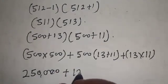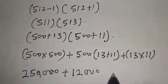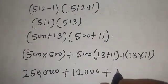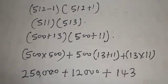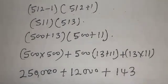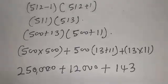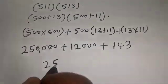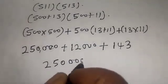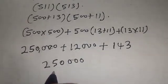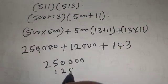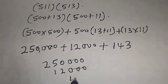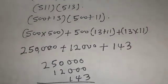we have 12,000 plus 143. Let's add everything together now: 250,000 plus 12,000 plus 143, let's add everything together.